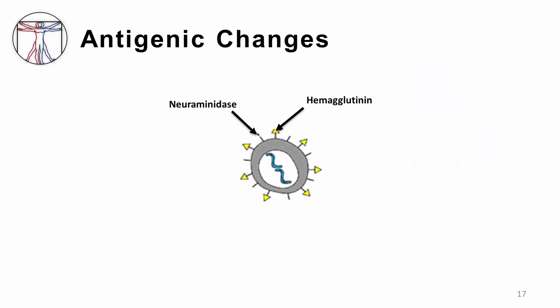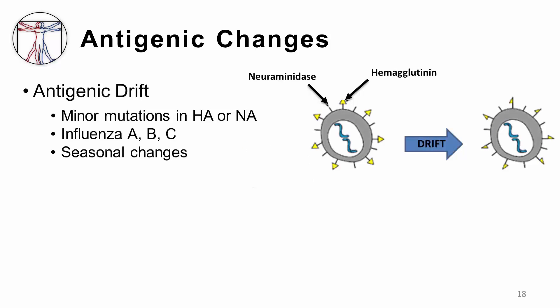The answer lies in the antigenic changes that occur within the influenza virus. During viral replication, mutations can occur in the hemagglutinin or neuraminidase proteins, leading to minor changes in the antigenic nature of these proteins. The resulting new strains are only partially recognized by our immune system, leading to seasonal influenza disease. This phenomenon is referred to as antigenic drift, and it occurs in all types of influenza virus.